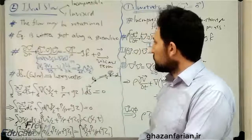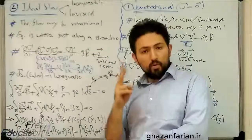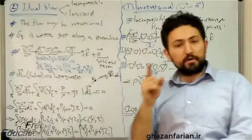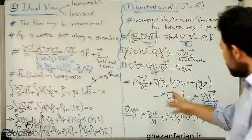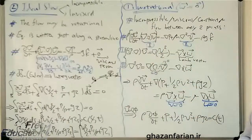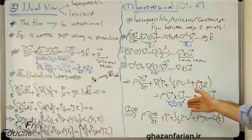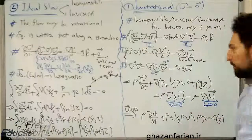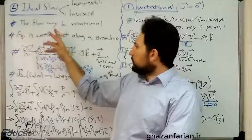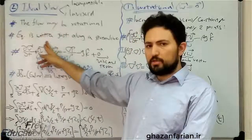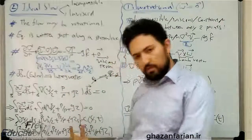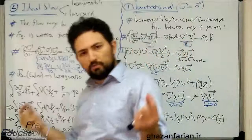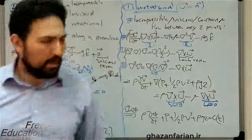This version of Bernoulli's equation is written between two points which are located along a specific streamline. In the previous version, this assumption is eliminated, so you can write it between any two points. But here, it is essential to add this assumption, and the final equation is only valid between two points located on a specific streamline.